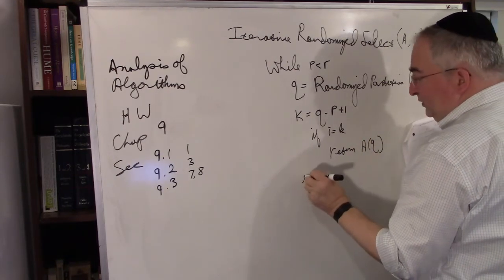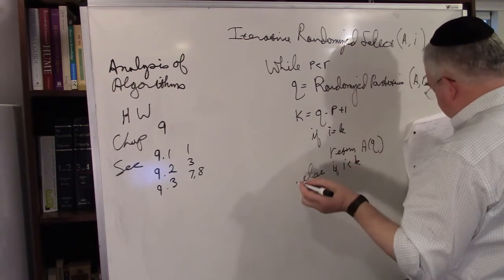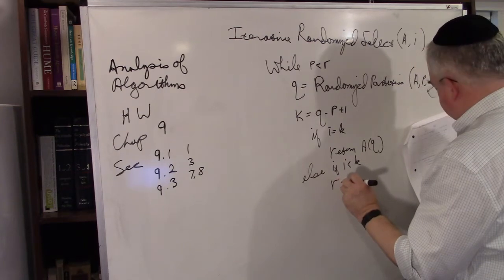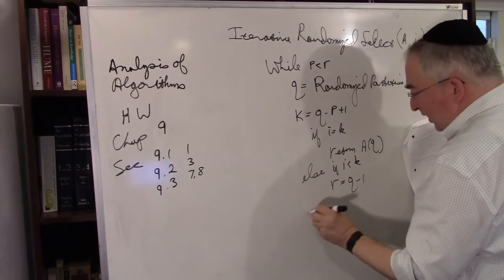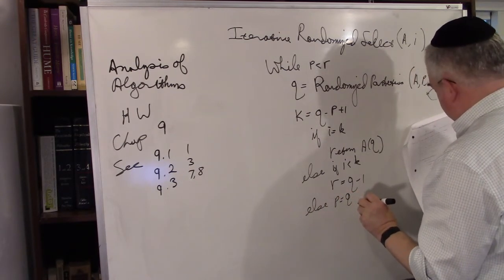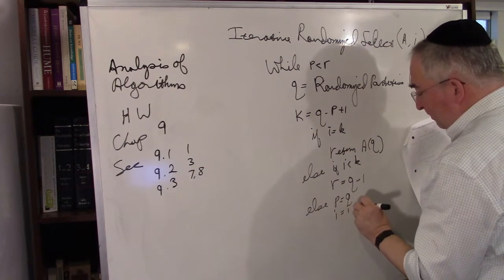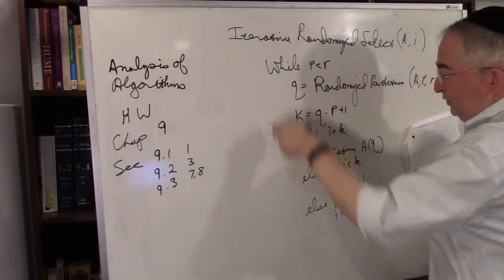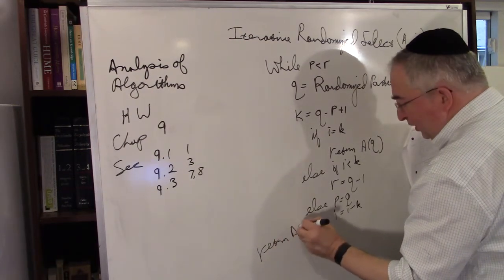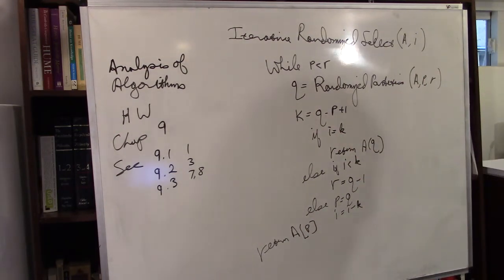Else, if i is less than k, then r is equal to q minus one. Else — that means i is greater than k — p is equal to q, and i equals i minus k. So we do this over and over. Finally, return a of p. So we took out the recursion, and that's fine.